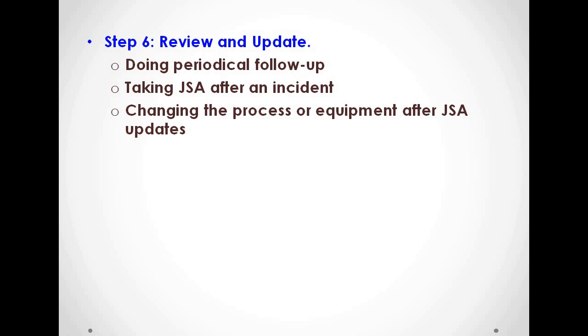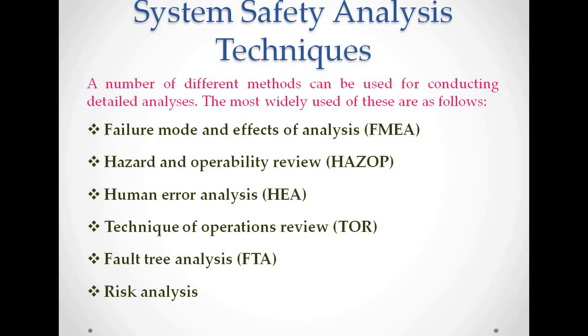This covers system safety analysis. A number of different methods can be used for conducting detailed analysis. Some of the widely used system safety analysis techniques are: Failure Mode and Effects Analysis (FMEA), Hazard and Operability Review, Human Error Analysis (HEA), Technique of Operations Review (TOR), Fault Tree Analysis (FTA), and risk analysis. We will see all of these in detail in the forthcoming videos. Thank you.